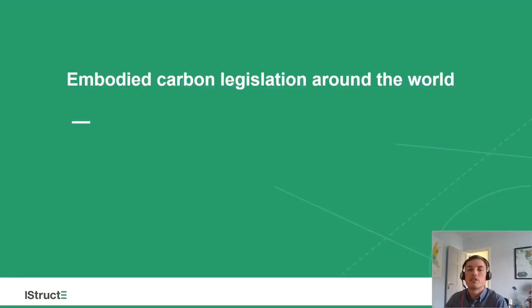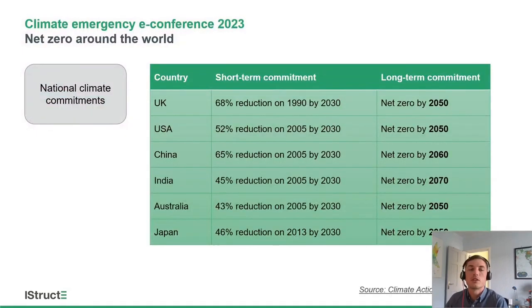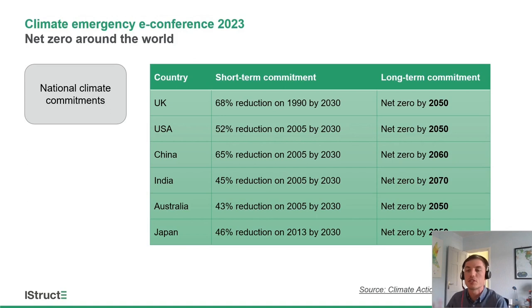Now we're going to dive into embodied carbon legislation around the world. Looking at national climate commitments, we can see that the UK, USA, China, India, Australia, and Japan — some of the largest economies — have all made short-term commitments to reduce their carbon emissions by 2030, and long-term commitments to decarbonise completely: some by 2050, others 2060 or 2070, but certainly in the next few decades.